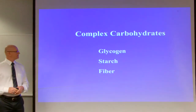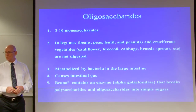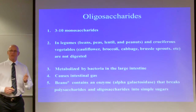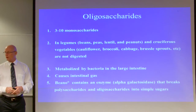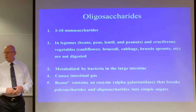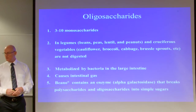Complex carbohydrates are glycogen, starch, and fiber. Oligosaccharides are three to ten monosaccharides — they are short polysaccharides found in legumes such as beans, peas, lentils, and peanuts, and in cruciferous vegetables such as cauliflower, broccoli, cabbage, and Brussels sprouts. These oligosaccharides are not digested by us; they are metabolized by bacteria in the large intestine and can cause gas. Products such as Beano contain the enzyme alpha-galactosidase, which helps break down these oligosaccharides into simple sugars.